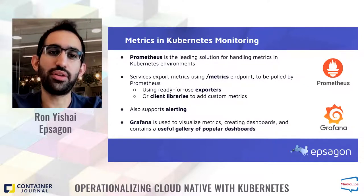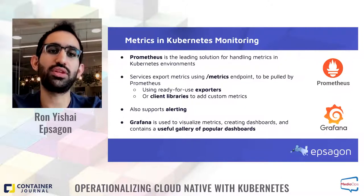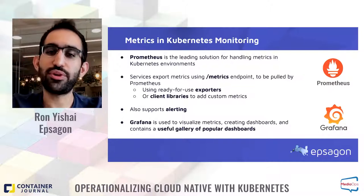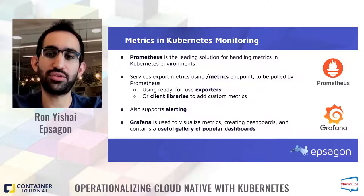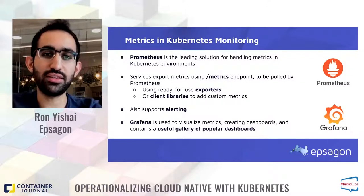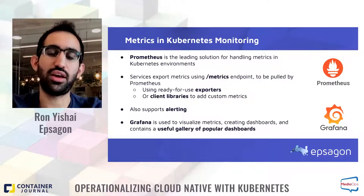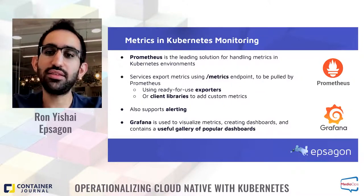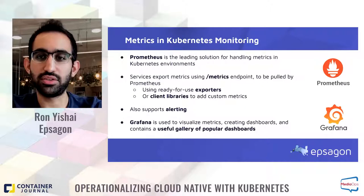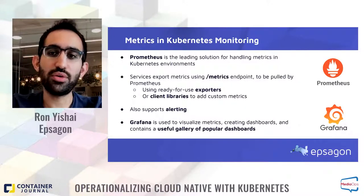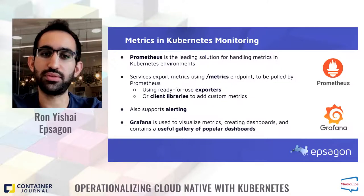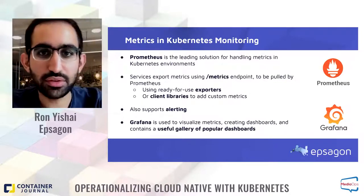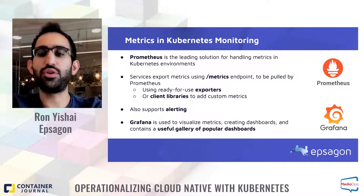How does monitoring in Kubernetes environments look? The main element is usually metrics. Prometheus is a leading open source solution for handling metrics in Kubernetes environments, and it can be integrated natively. Prometheus can collect Kubernetes infrastructure metrics available by default, and it's very easy to collect metrics from hosted services like Redis or Kafka using ready-for-use exporters. You can also have custom metrics updated inside your code that get shipped to Prometheus. You can add alerting in Prometheus so you get notified when metrics are outside a predefined valid range.